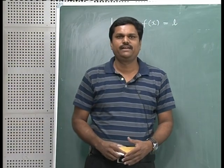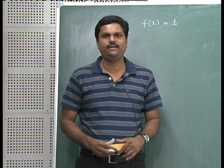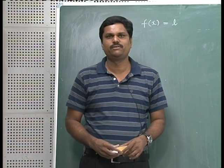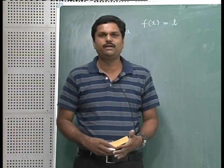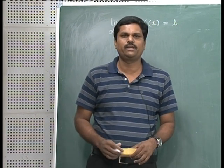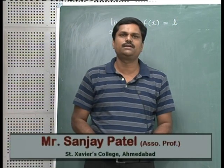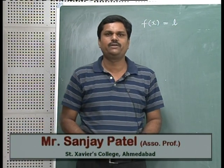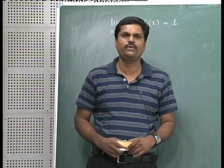Good afternoon friends. In the last lecture we have seen how to prove the limit as (x,y) tends to (a,b) of f(x,y) equals l — that is how to prove that the double limit l is true or not for a given function of two variables at a given point. Today we are going to discuss two methods of proving that a limit does not exist.